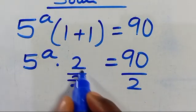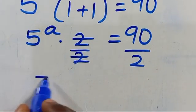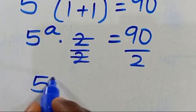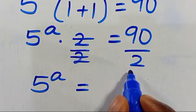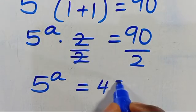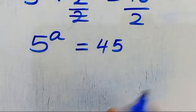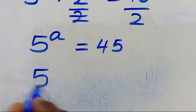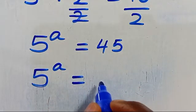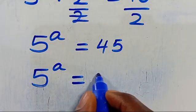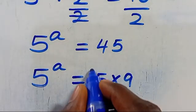Dividing through by 2, the 2s cancel, giving us 5 to the power of a equals 90 divided by 2, which gives us 45. So we have 5 to the power of a equals 45, and we can express 45 as the product of 5 times 9.